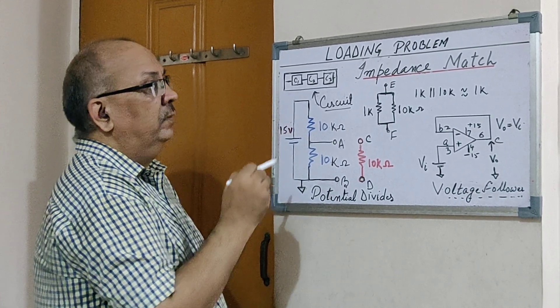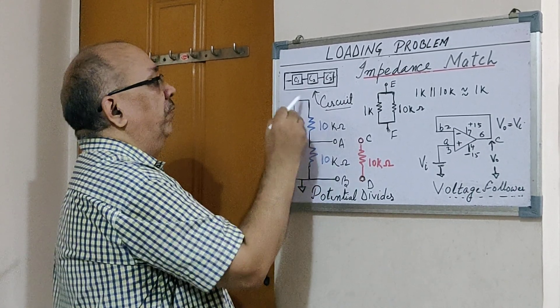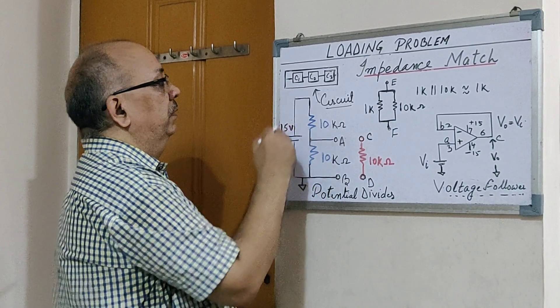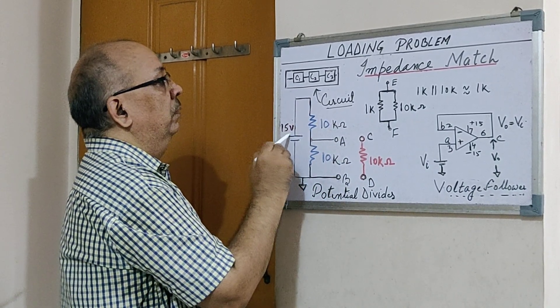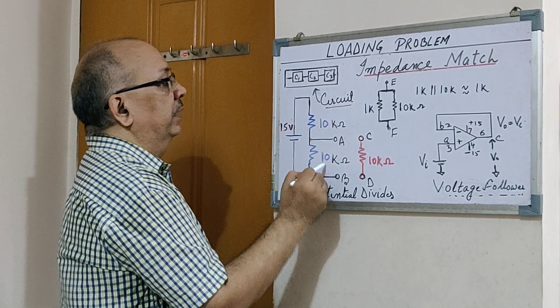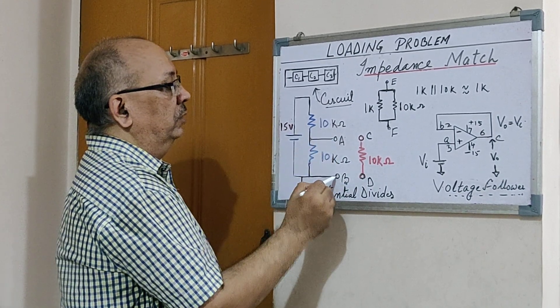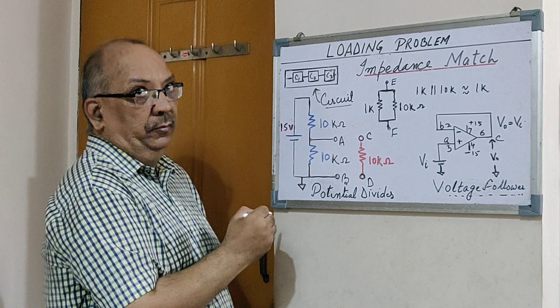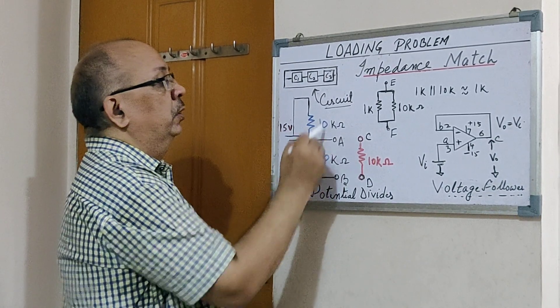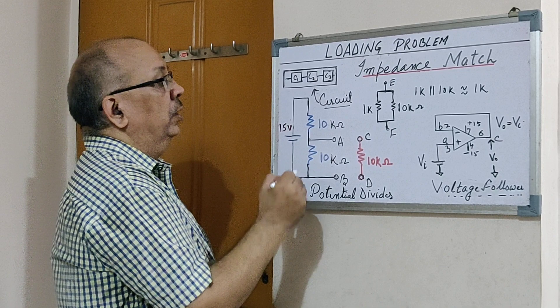15 volts. I have taken two resistors, 10k and 10k, which will divide the potential, and so the total potential across A and B will be 7.5 volts—15 divided by two equal values. Now the idea is, I want to apply this 7.5 volts to a certain circuit. Let's imagine a situation where the circuit resistance itself